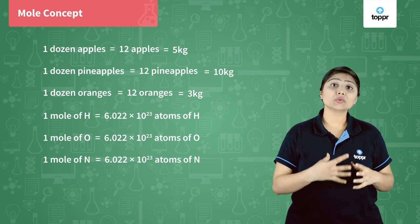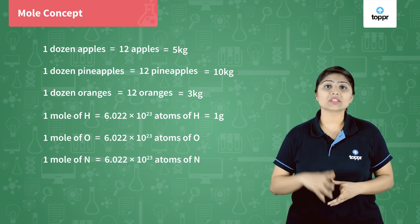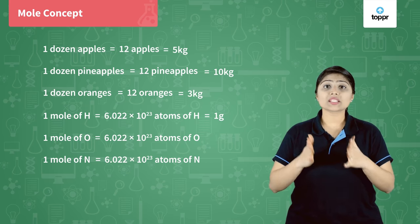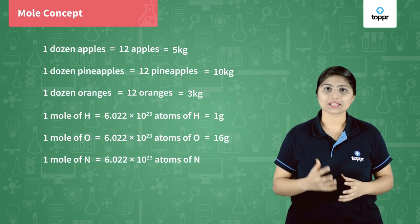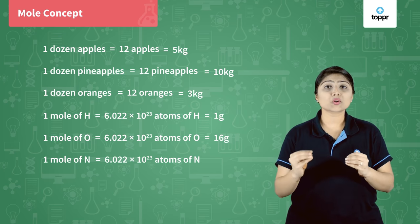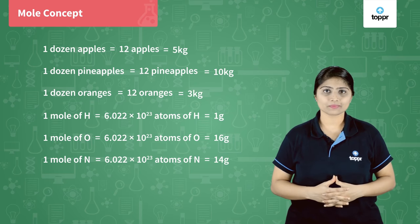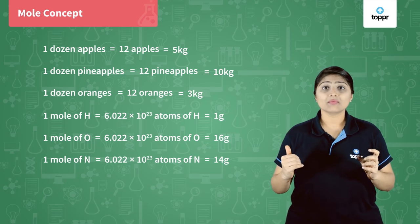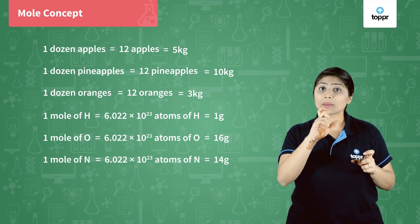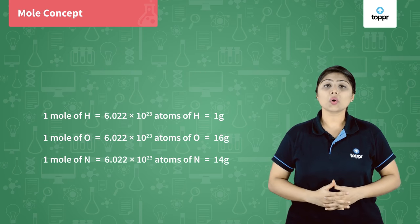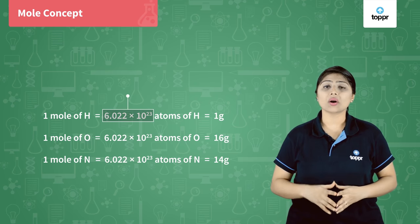Mass of 6.022 × 10²³ atoms of hydrogen will be one gram, because the atomic mass of hydrogen is one unit. Mass of 6.022 × 10²³ atoms of oxygen will be 16 grams, because atomic mass of oxygen is 16 units. And mass of 6.022 × 10²³ atoms of nitrogen will be 14 grams, because atomic mass of nitrogen is 14 units. So one mole of any element will have a fixed number of atoms — 6.022 × 10²³ — but the mass will depend upon the atomic mass of that element. This fixed number was given by Avogadro, so it is called Avogadro's number.